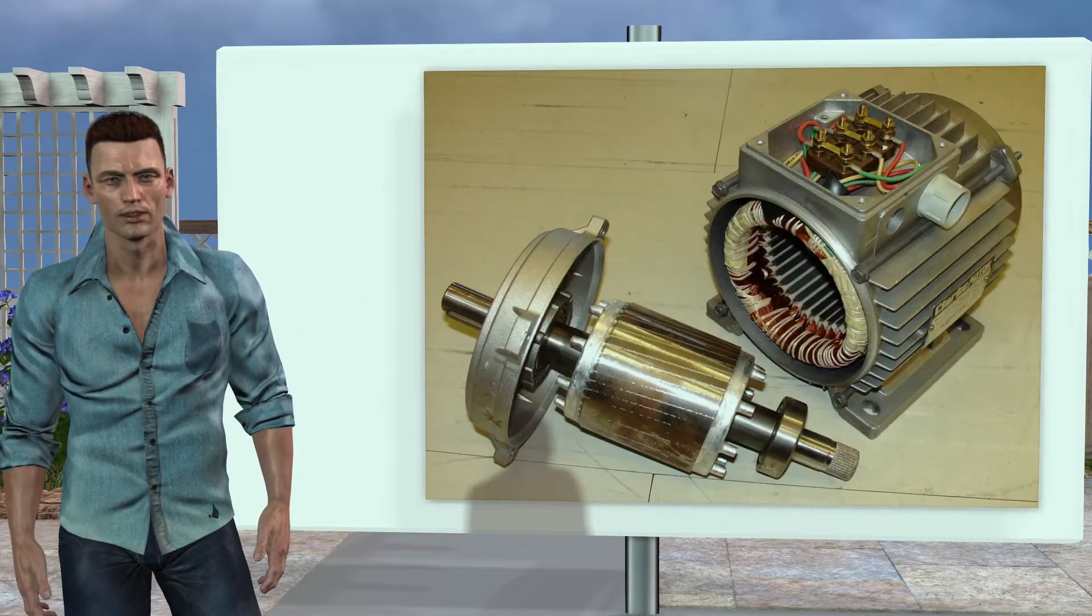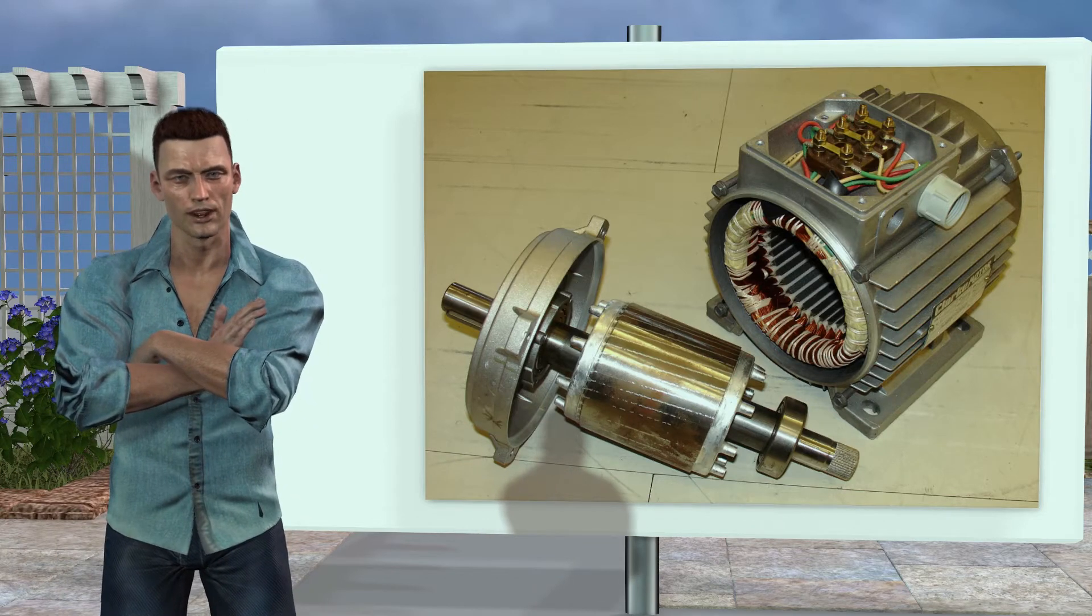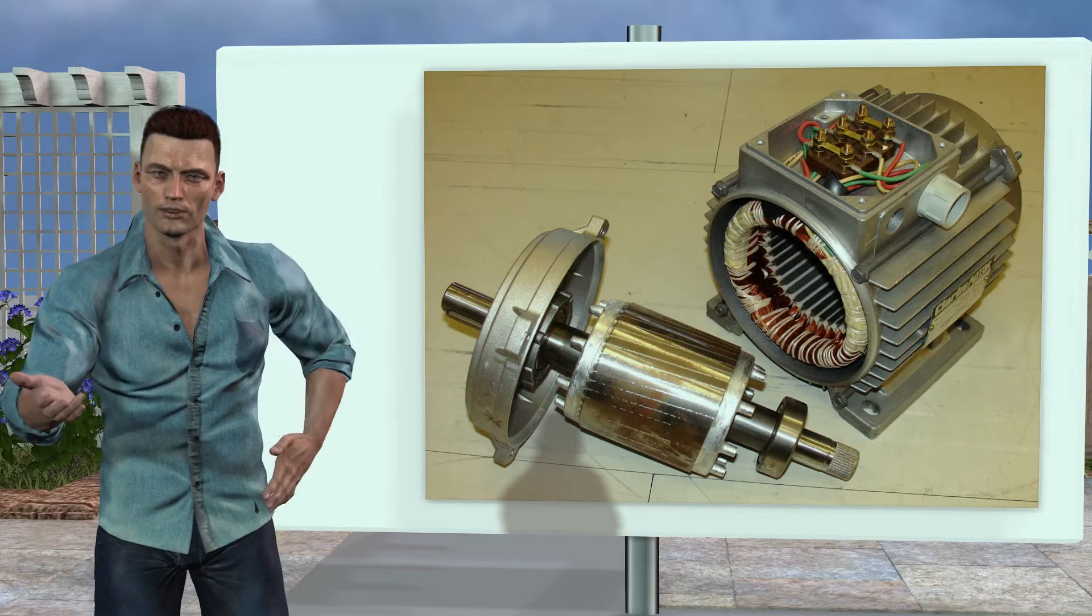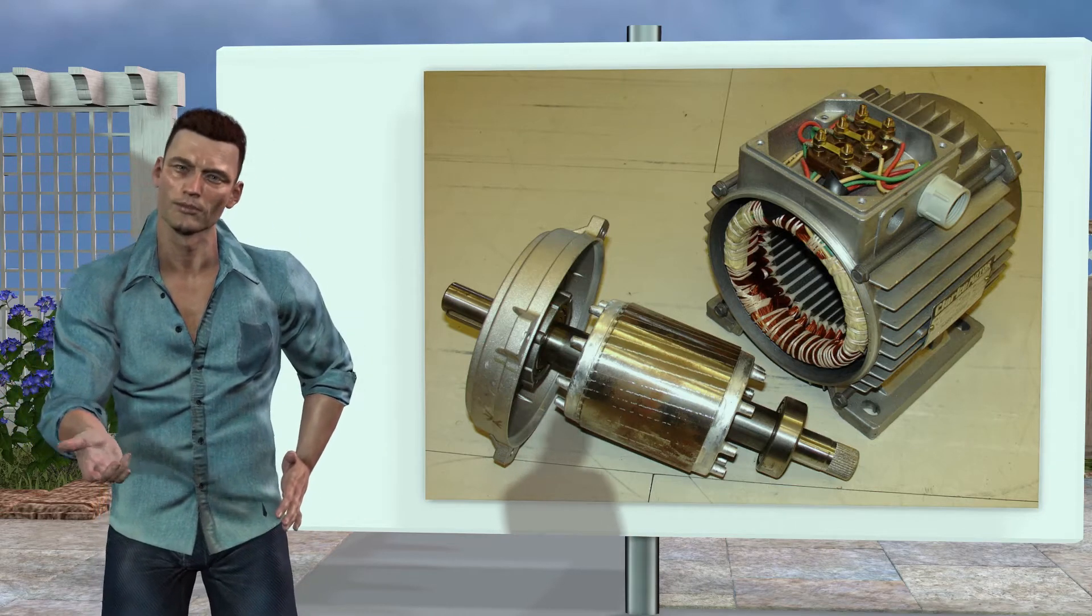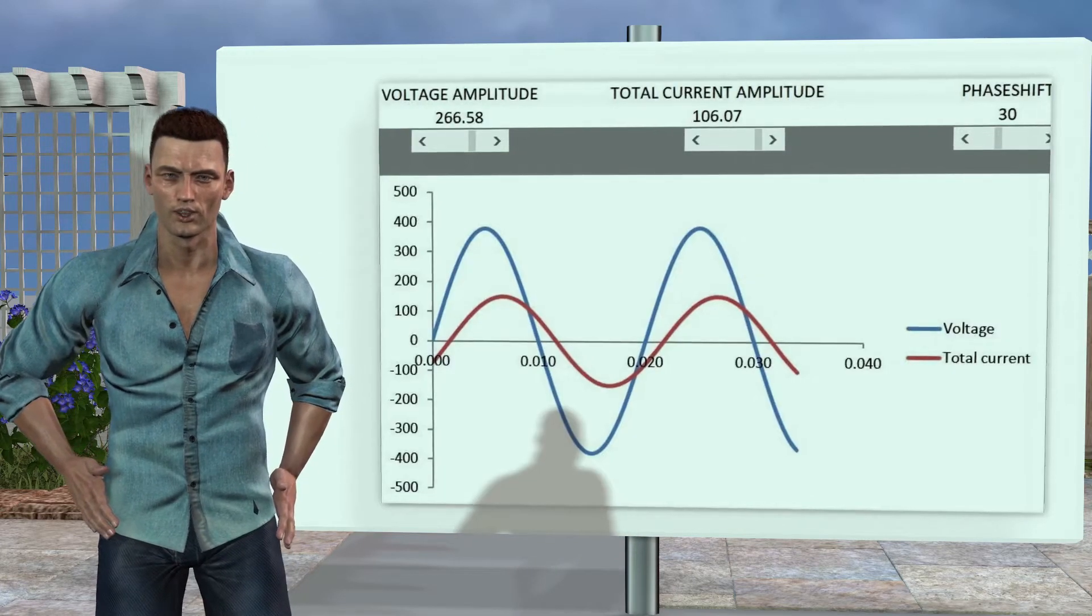Now we can consider a combination of resistance and inductance, as happens for example in a motor, whose copper windings have a certain resistance and, given their coil-shaped construction they also have an inductance. In this case, the phase shift takes an intermediate value between 0 and 90 degrees.